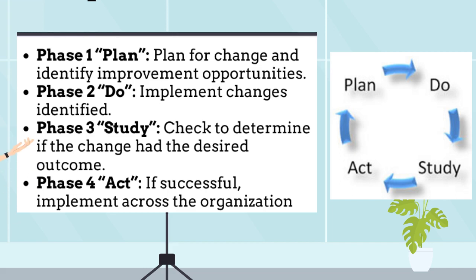The phases are: Phase 1 – Plan: Plan for Change and Identify Improvement Opportunities. Phase 2 – Do: Implement Changes Identified. Phase 3 – Study: Check to Determine if the change had the desired outcome. Phase 4 – Act: If Successful, Implement Across the Organization and Process.